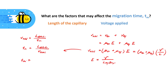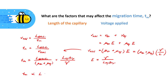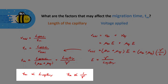The migration time will be equal to the length to the detector divided by the sum of the electro-osmotic mobility plus the electrophoretic mobility, multiplied by the length of the capillary over the voltage applied. We can see that the migration time is directly proportional to the length of the capillary and inversely proportional to the voltage applied. Therefore, to make electrophoresis more efficient, we can simply shorten the length of the capillary and increase the voltage applied across the capillary.